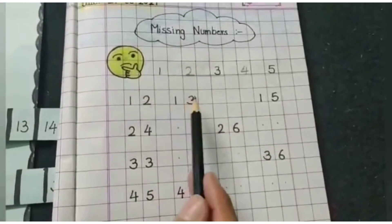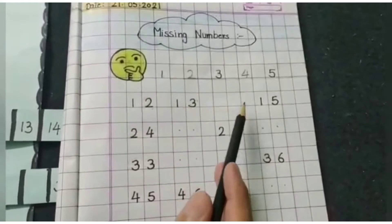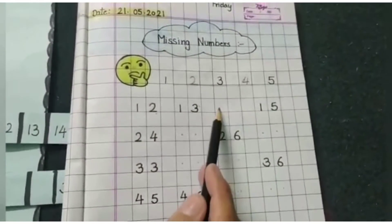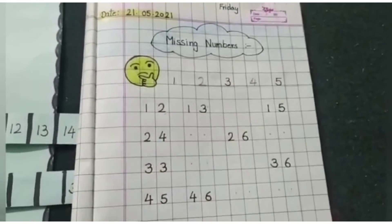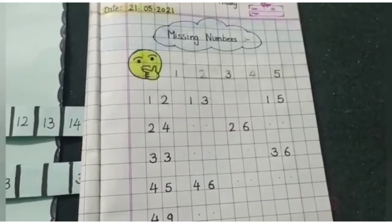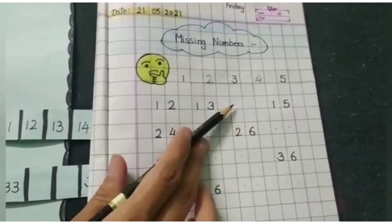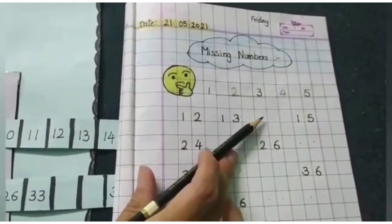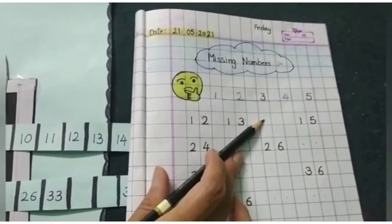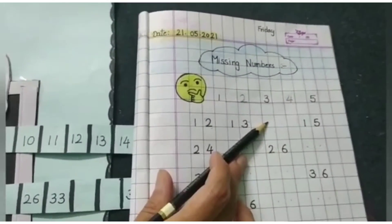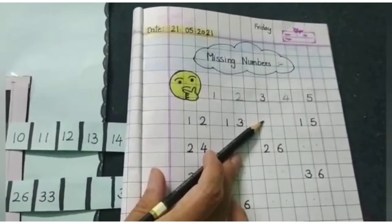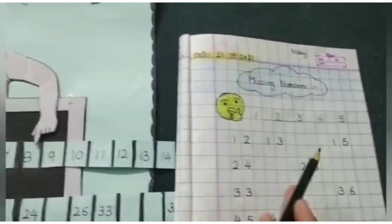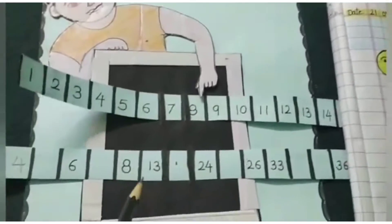12, 13. Again, a number is missing. Which number is missing, Ojas? 14. Speak loudly. 14. Yes, number 14 is missing.